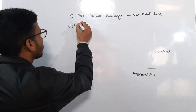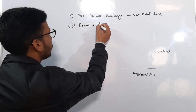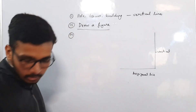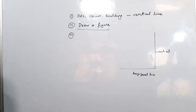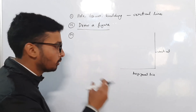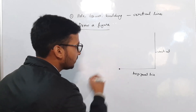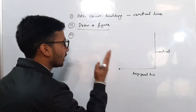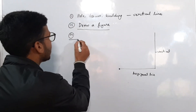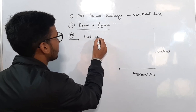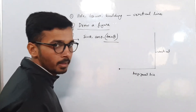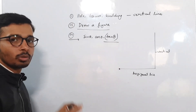Second, remember that you must draw a figure according to the given conditions. Whatever condition is given, draw the figure first. Mark the observer as a point and denote it with a name. Then draw the angle of elevation or angle of depression as applicable. After the figure, identify whether to use sin theta, cos theta, or tan theta. Most height and distance questions will use tan theta. Focus on these steps to solve the question.